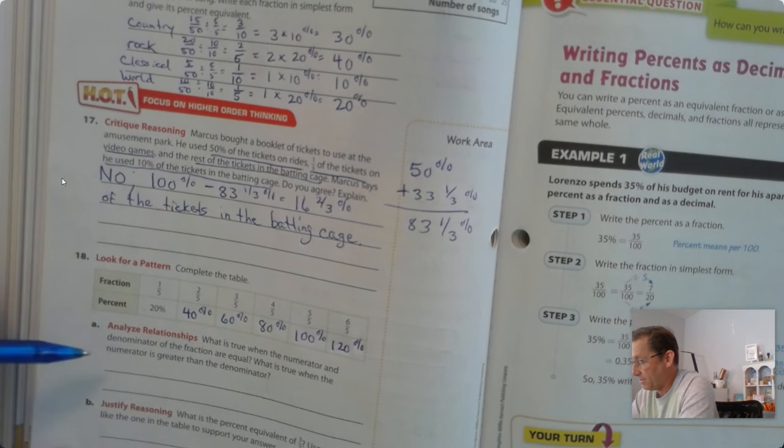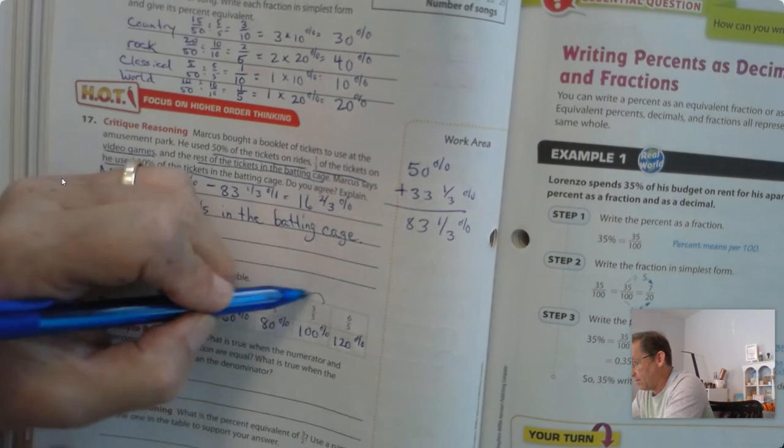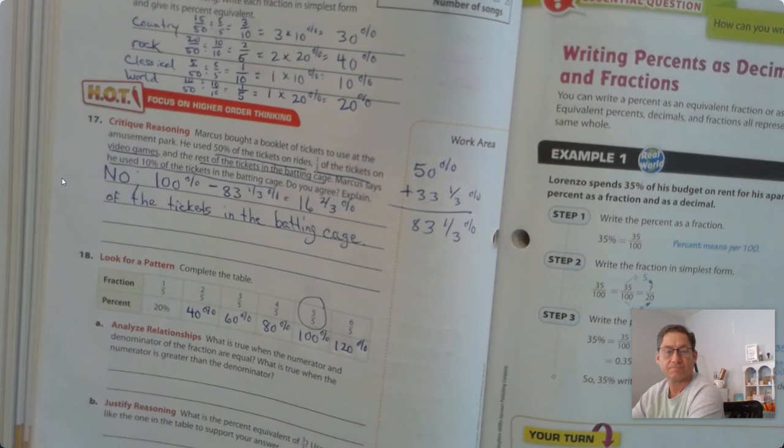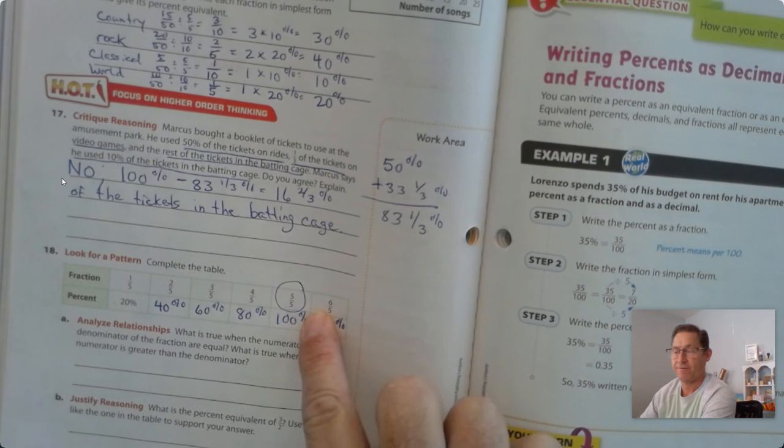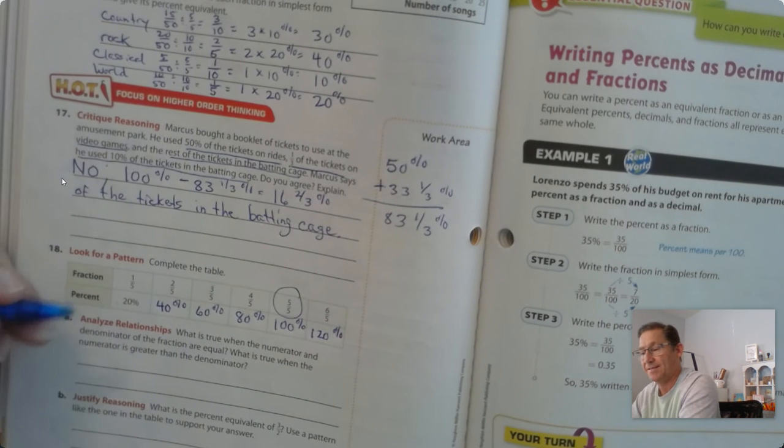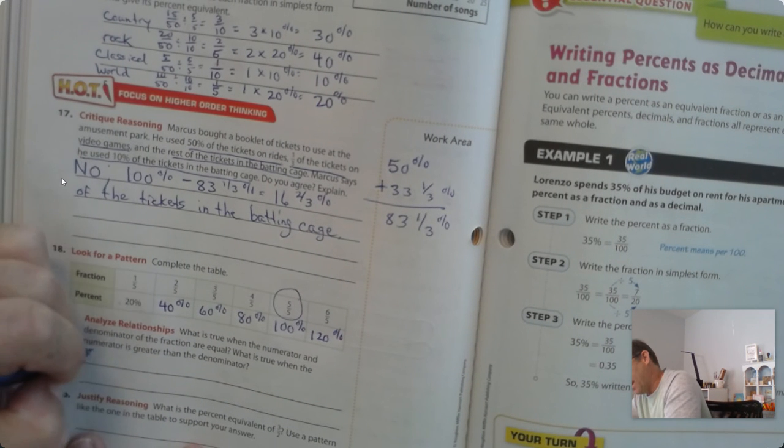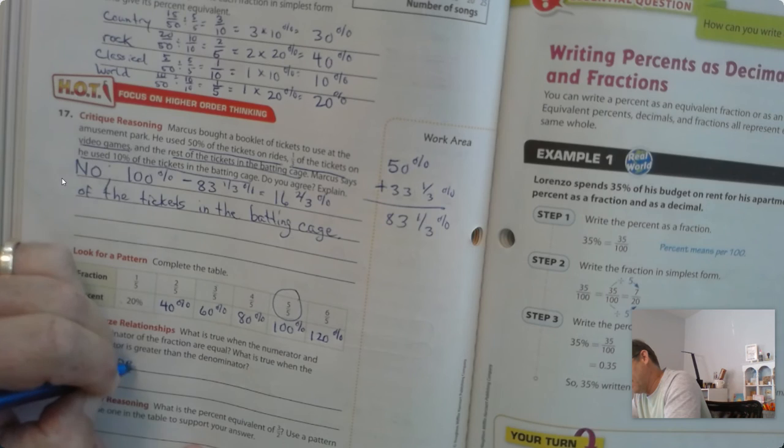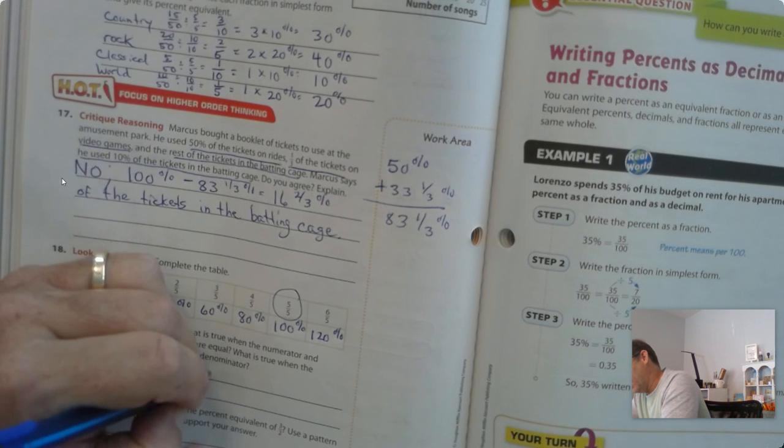So, what is true when the numerator and denominator of the fraction are equal? Well, when the numerator and denominator are equal, it equals one whole, or 100%. So, the percent is equal to 100.